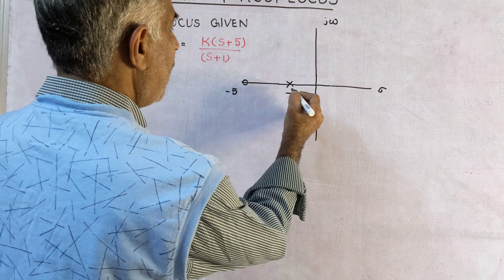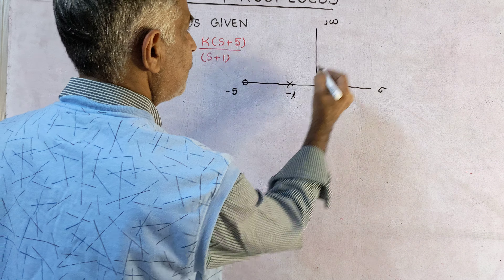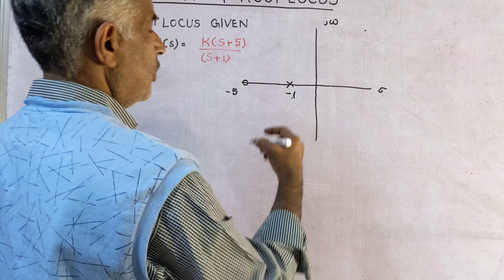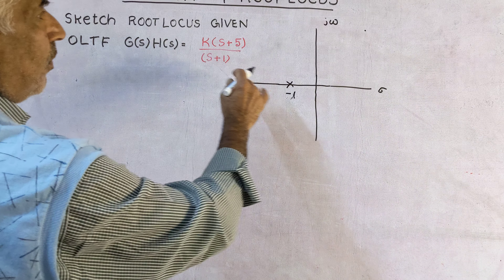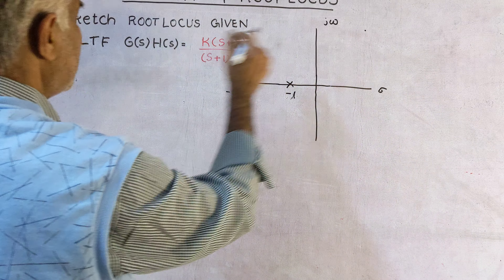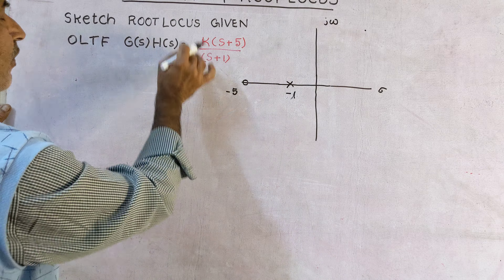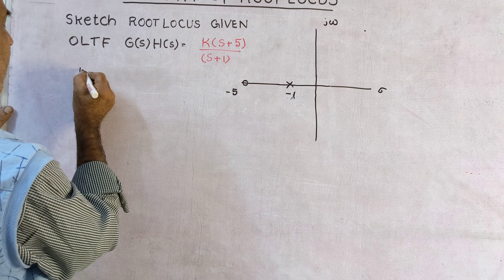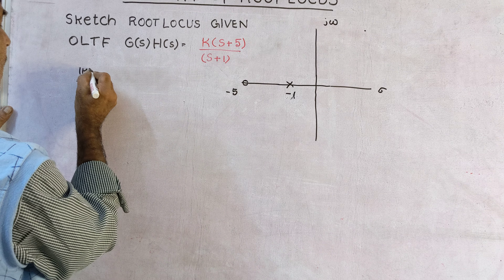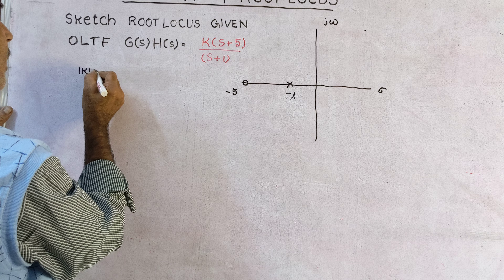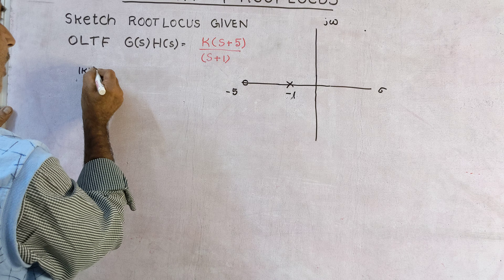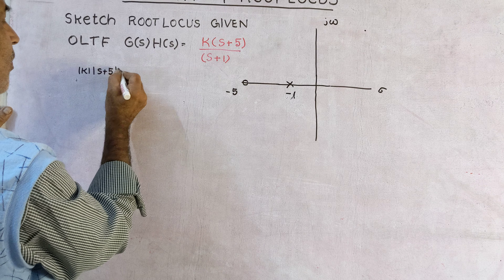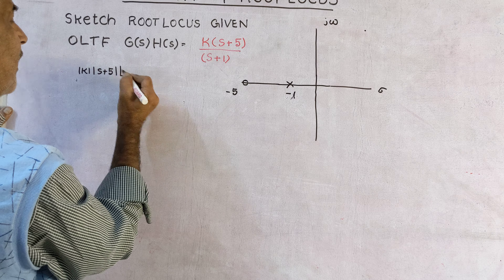Good morning students, once again I welcome you to my video lectures on control systems. I am continuing with the theory of root locus by taking the next example. The open loop transfer function G(s)H(s) is equal to k times (s plus 5) divided by (s plus 1). For the first time I have taken a zero — there is one pole and one zero.